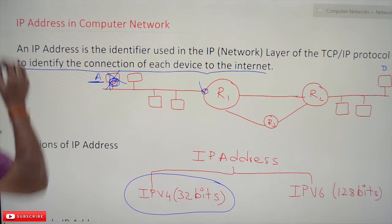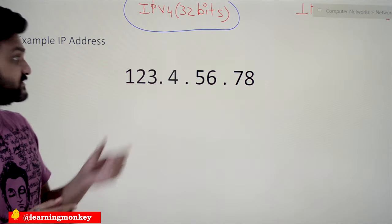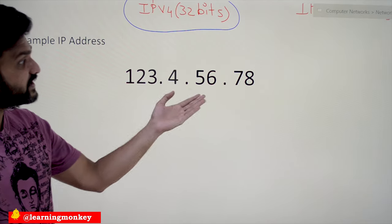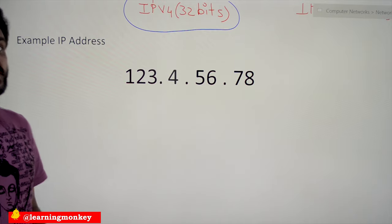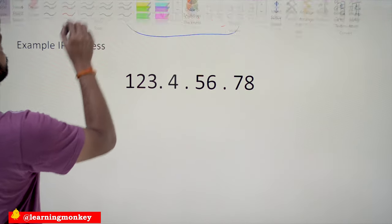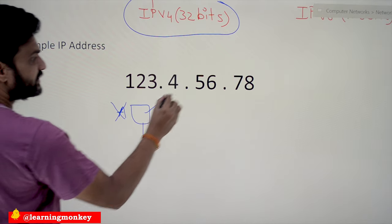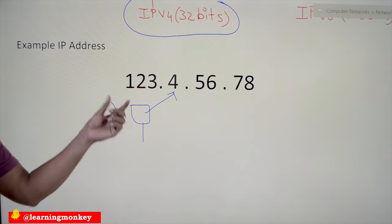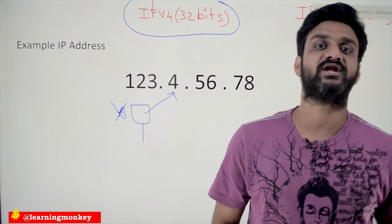Let's look at your first example IP address. This is how IP addresses look: 128.123.4.56.78. How it is designed, and whether there are other ways to represent IP addresses — all these concepts we will understand in a later class. For now, just have this visualization: so far we assumed each computer had an address like A or B; from now on, it is this IP address format that represents addresses. This is a version 4 IP address.